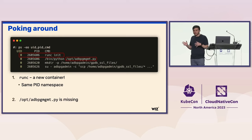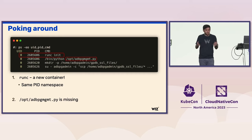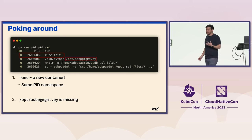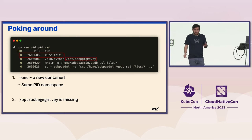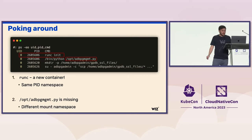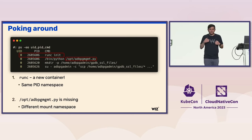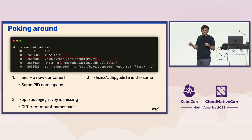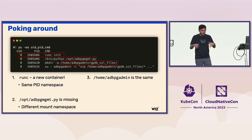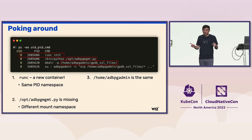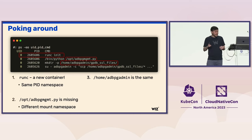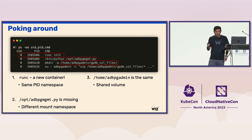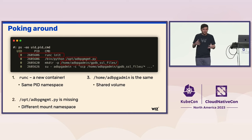The second process is a Python script being run from that new container, running from a script on slash opt. But when we went to slash opt, that script was not there — which means we have a different mount namespace. Our container's slash opt and that new container's slash opt are different folders. The third command creates a new directory under our home directory, slash home slash pgadmin. When we looked at that folder, it was indeed created — meaning we share the same slash home slash adbpgadmin, which means we have a shared volume.